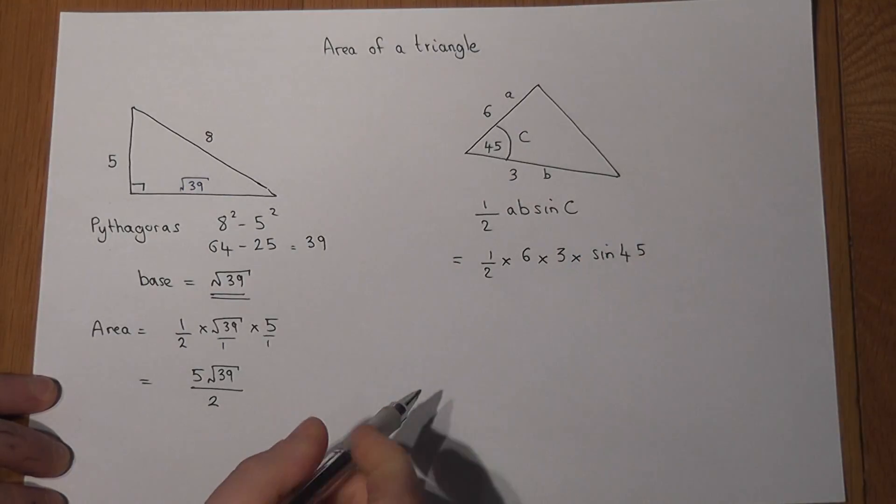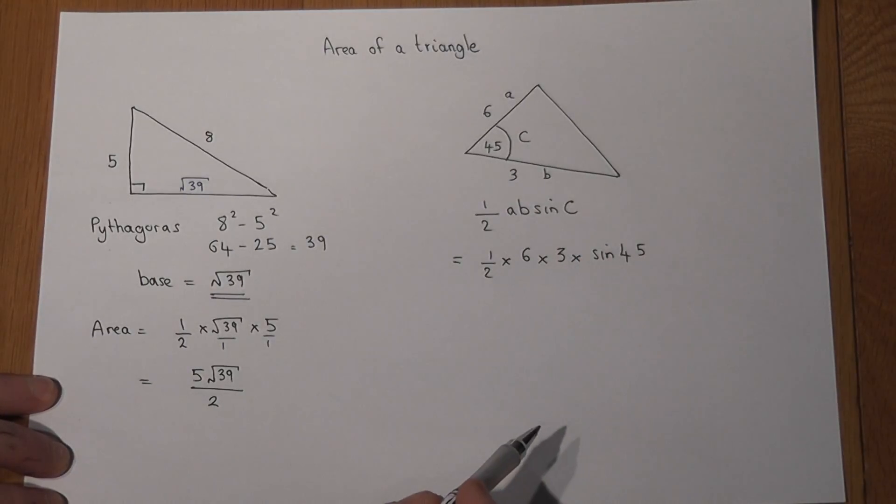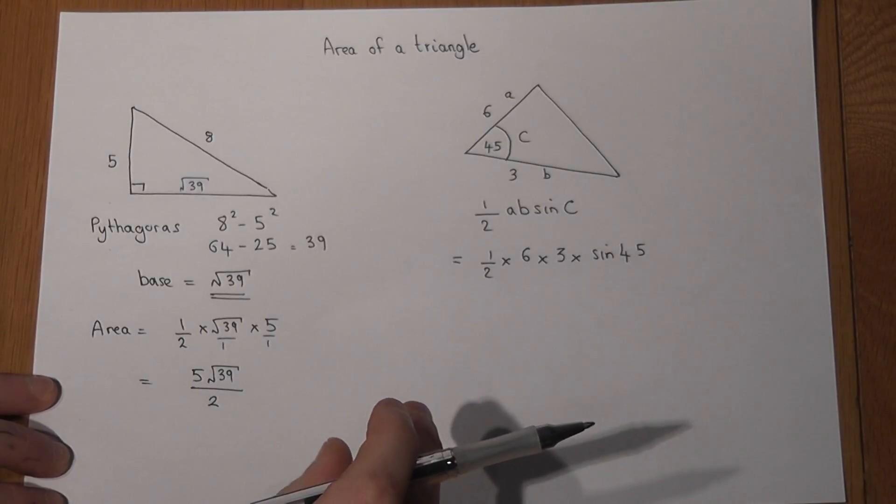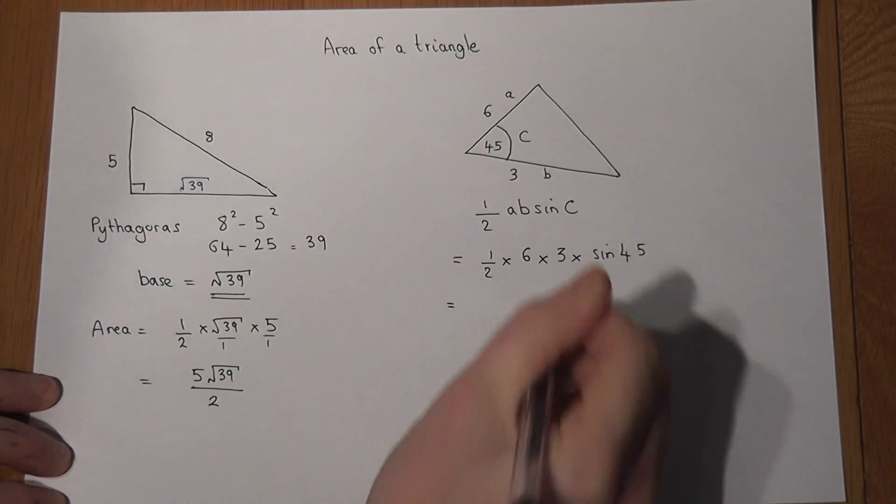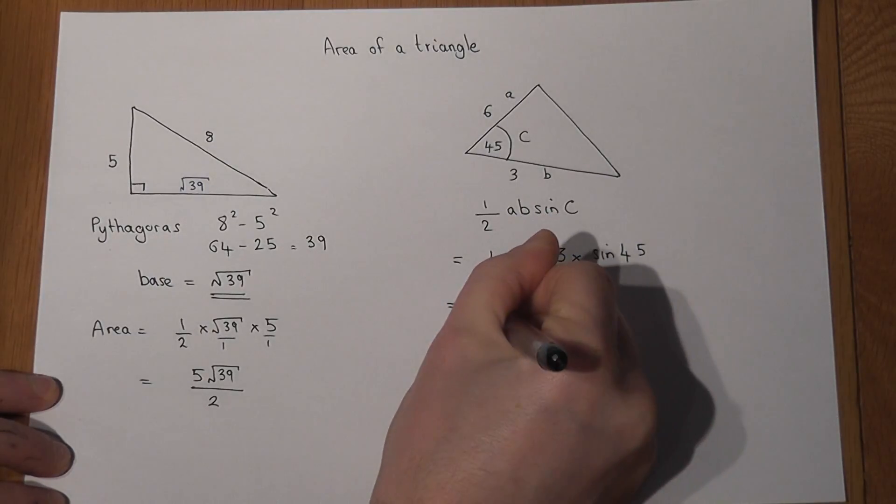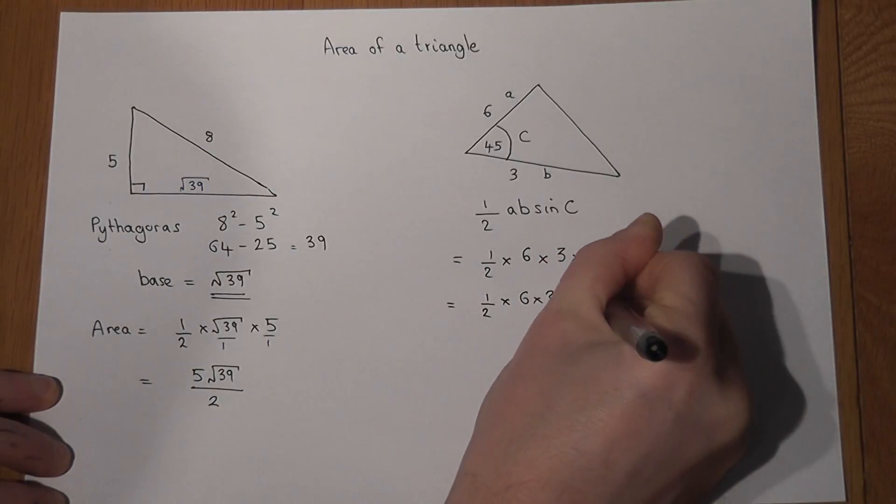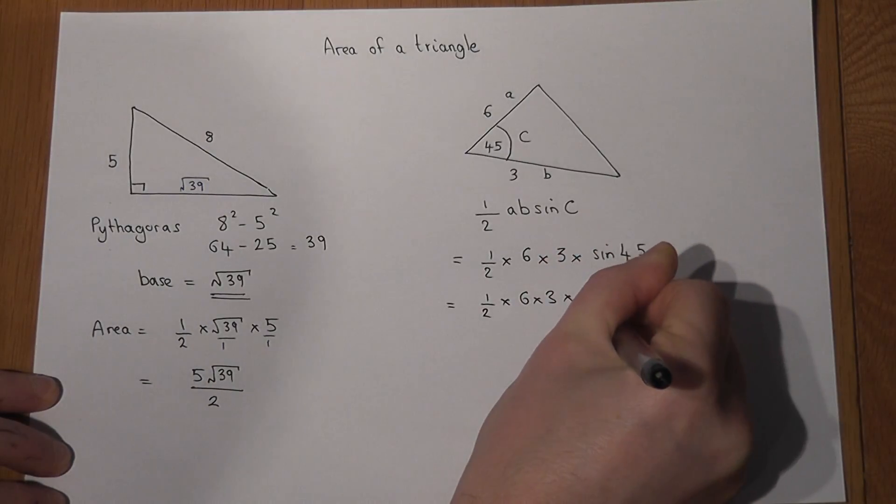Now if we have a calculator we can put that in as we see it, but if we've not got one, there are some key values to learn. And sine 45 is one of those. Sine 45 is the same as square root of 2 over 2.